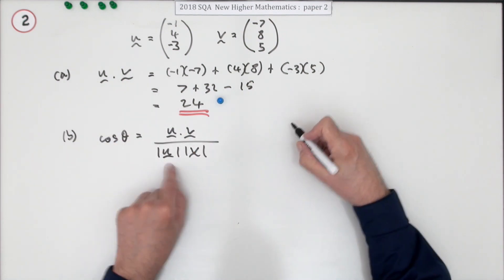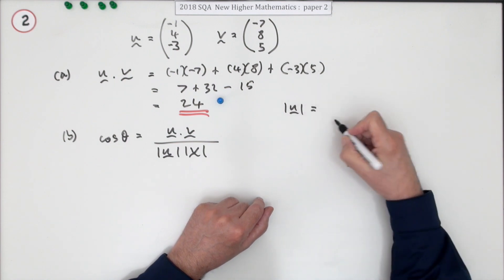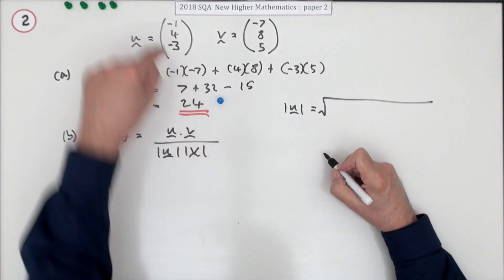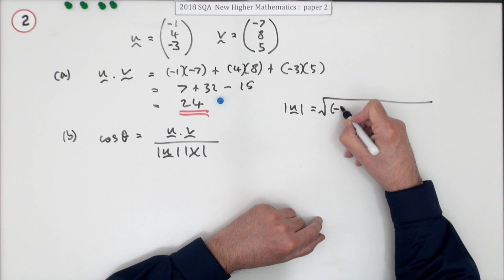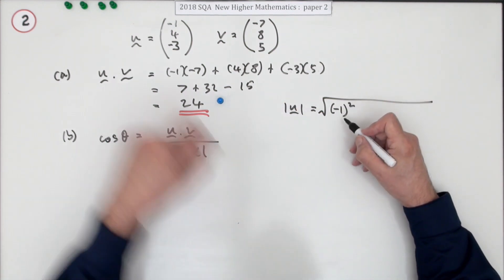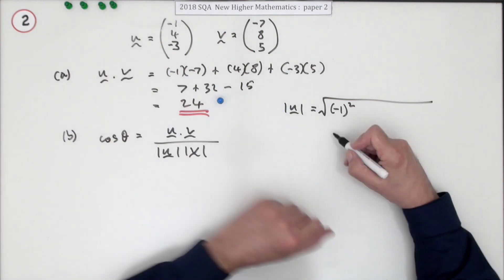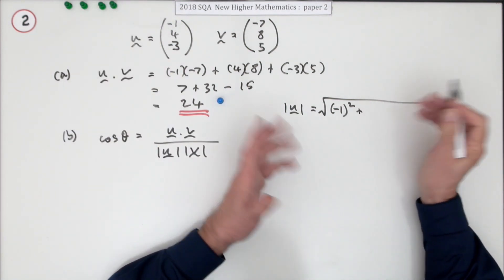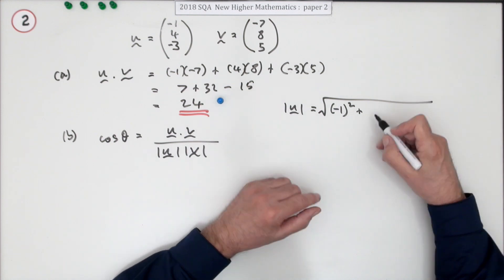You've got u dot v already, so now you need to work out the magnitude of u. The magnitude of u will be the square root of the squares of the components. I'll be rigorous here and put in the negative one, but you know the square of negative one and the square of one is the same. You could even bypass that and just put in the squares for the three parts.